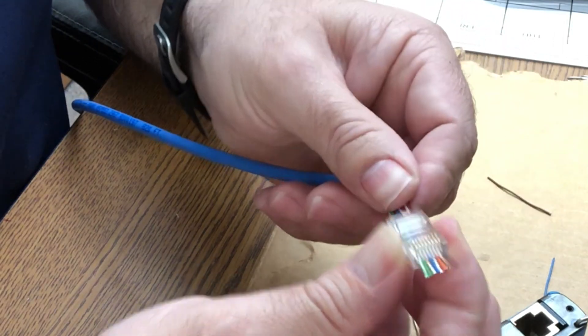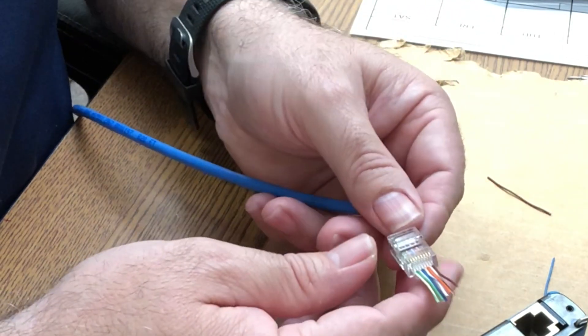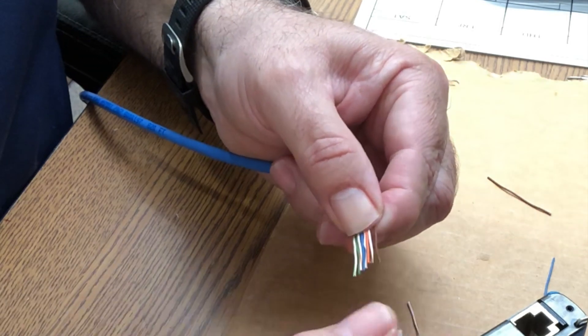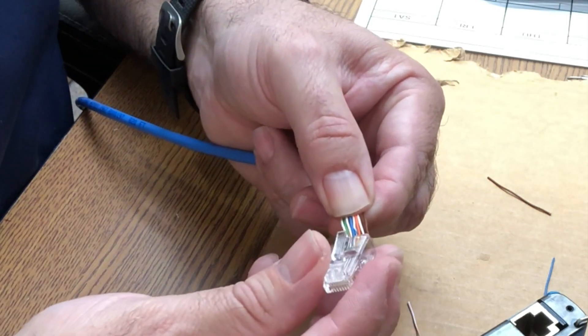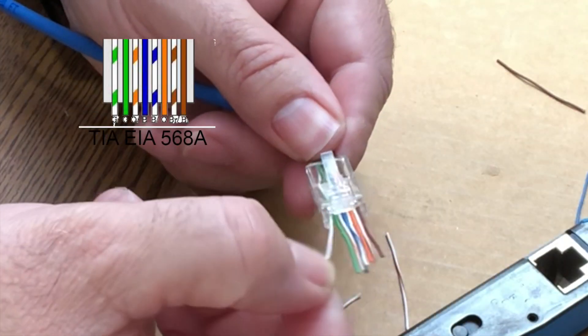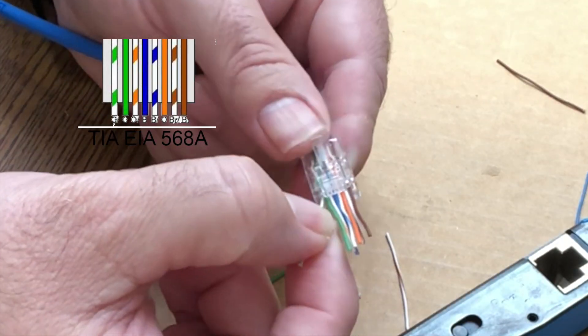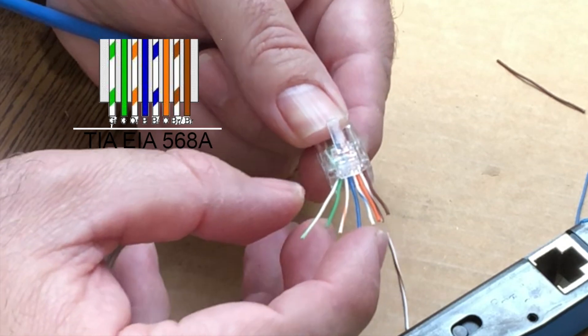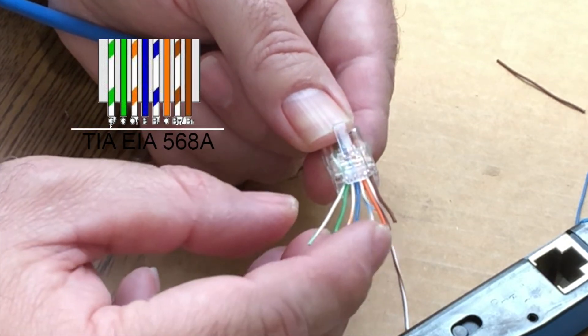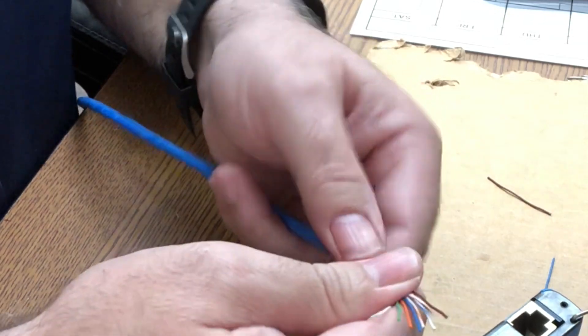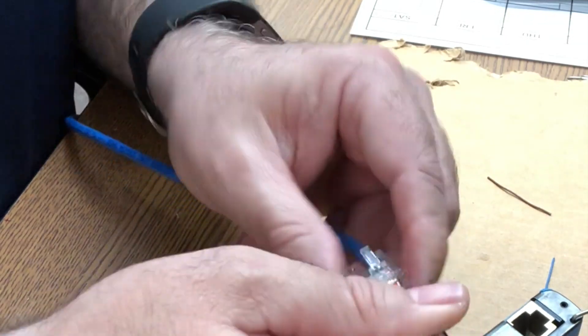And there we go. It looks like as always I put them in upside down so let me turn this around and flip my connector. There they are: striped green, solid green, orange, not blue, orange, solid blue, striped blue, solid orange, striped brown and brown. Once you got the cables in slide it and give it a nice little good tug on it.